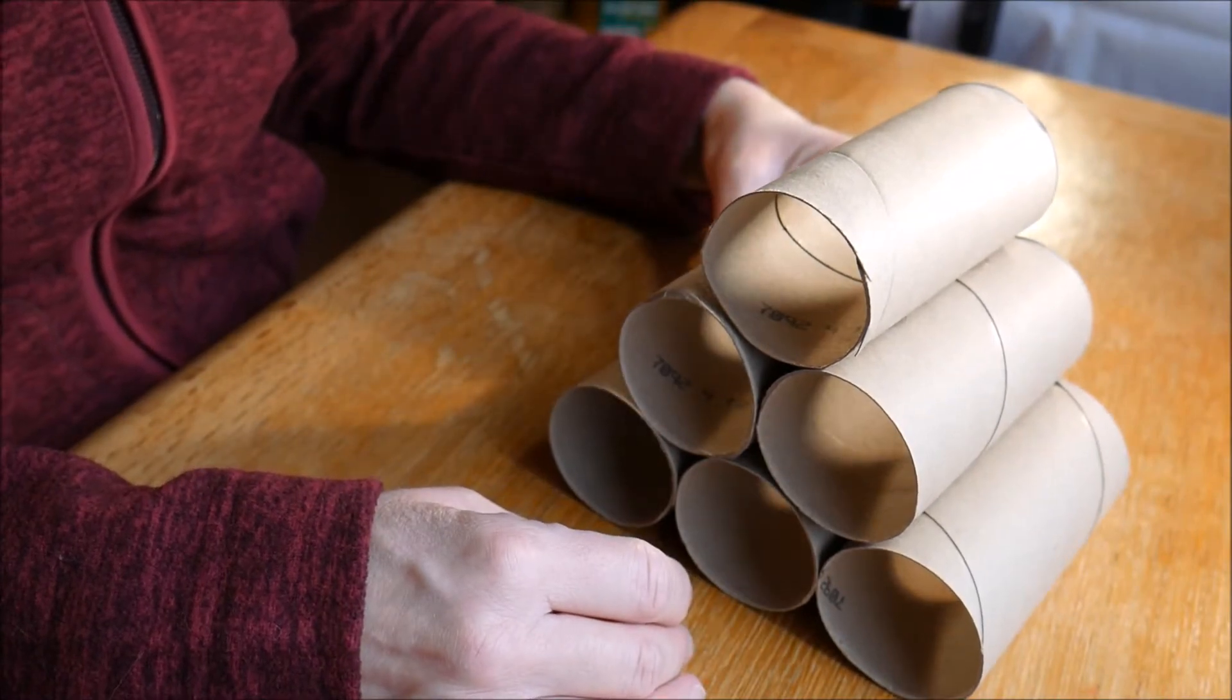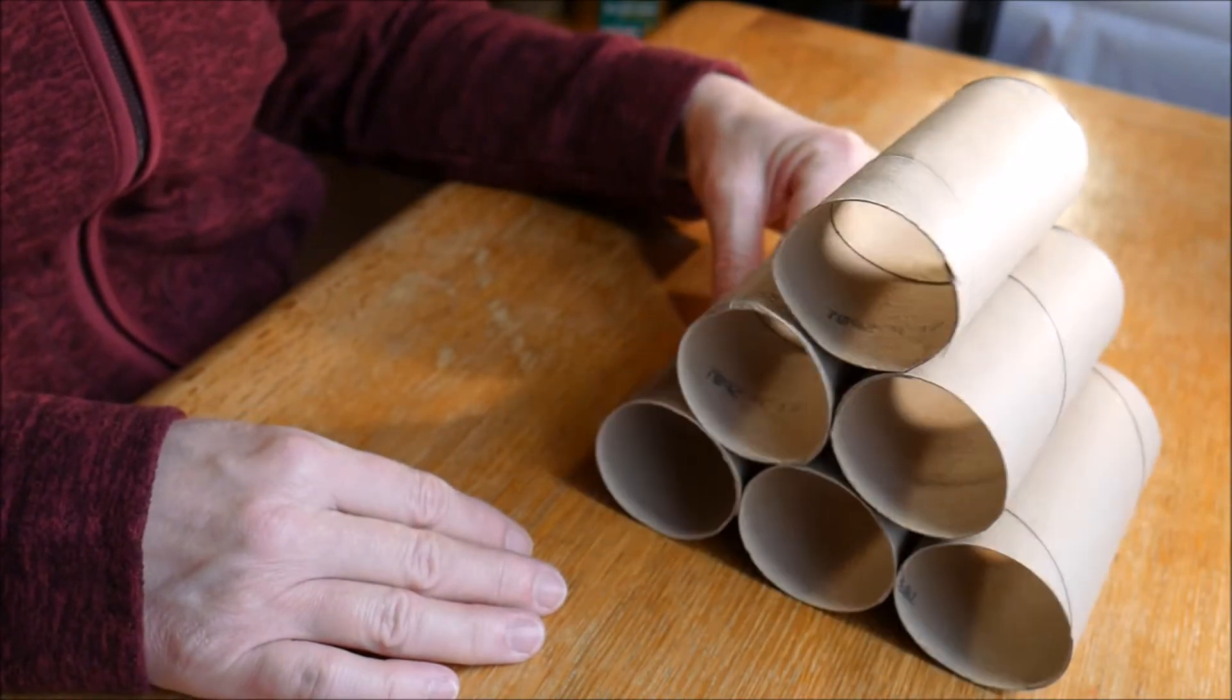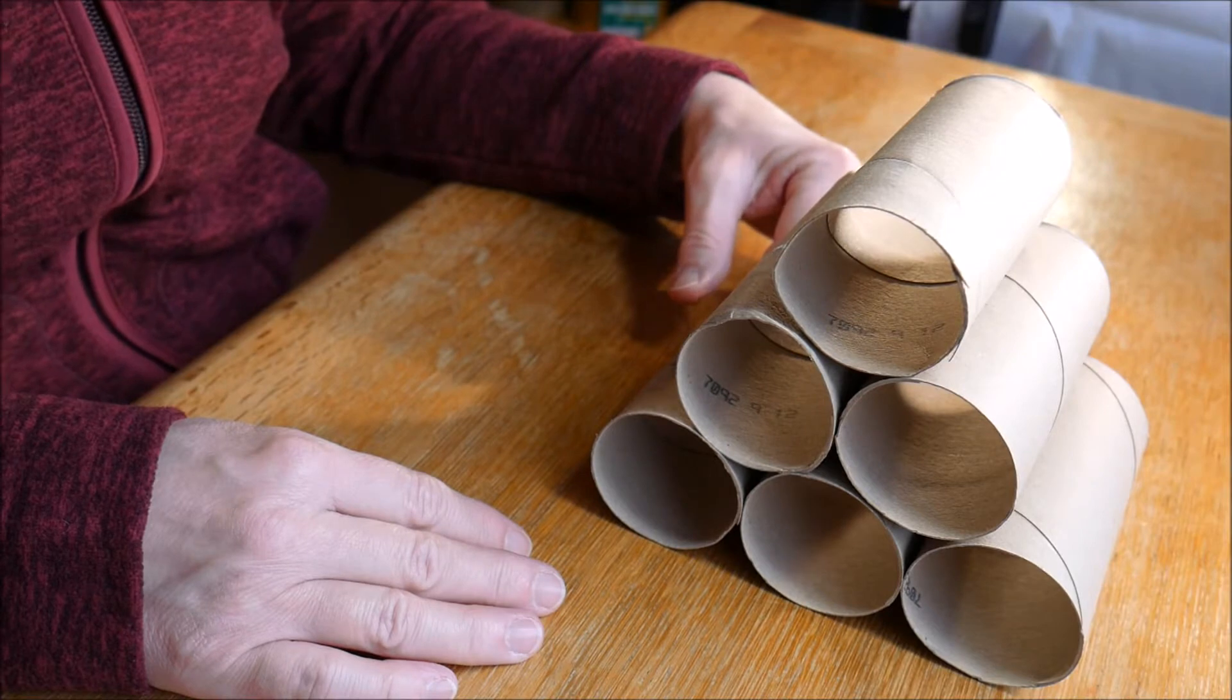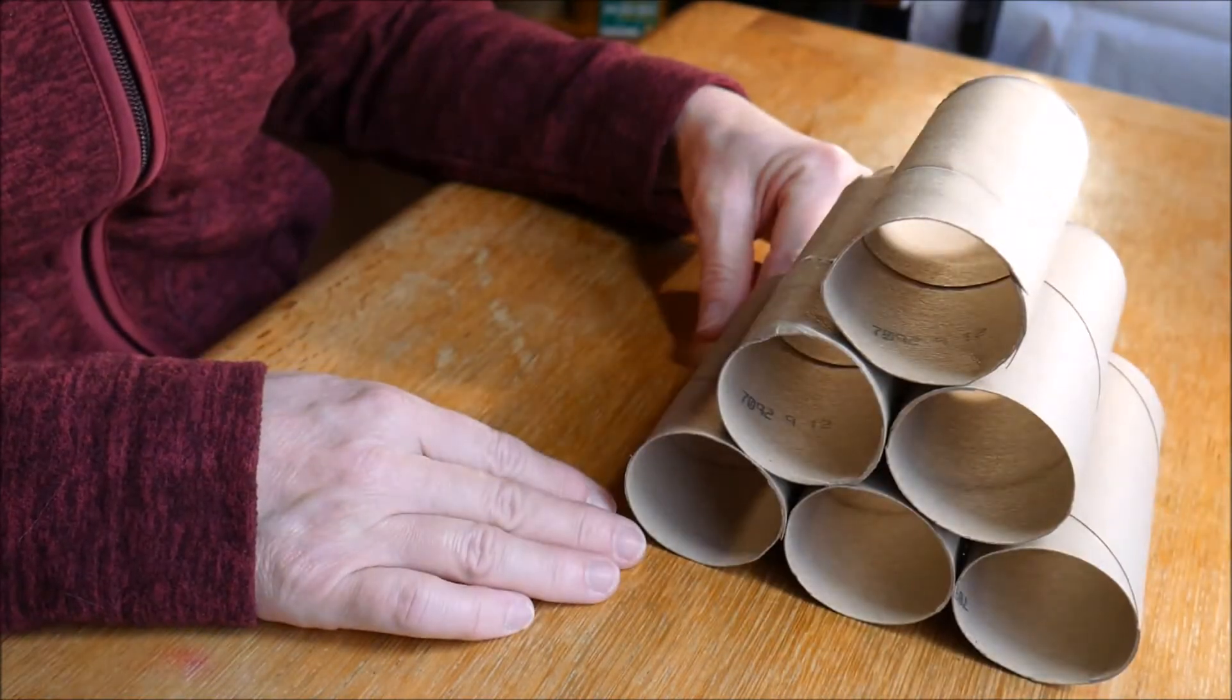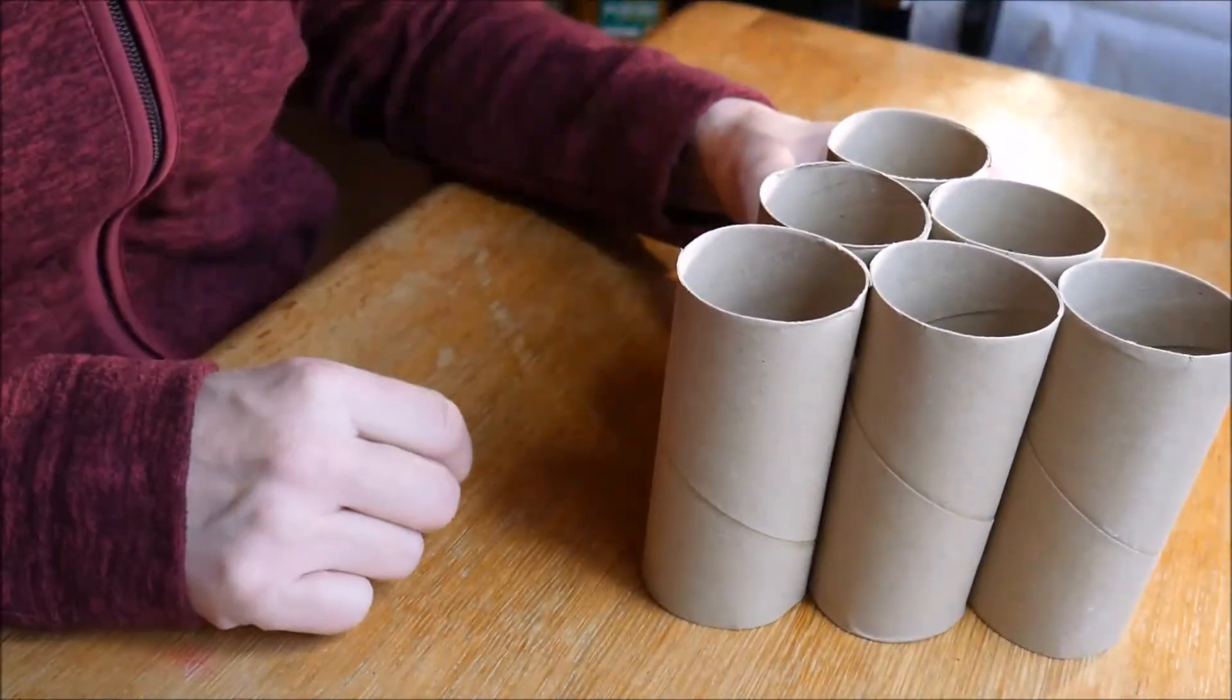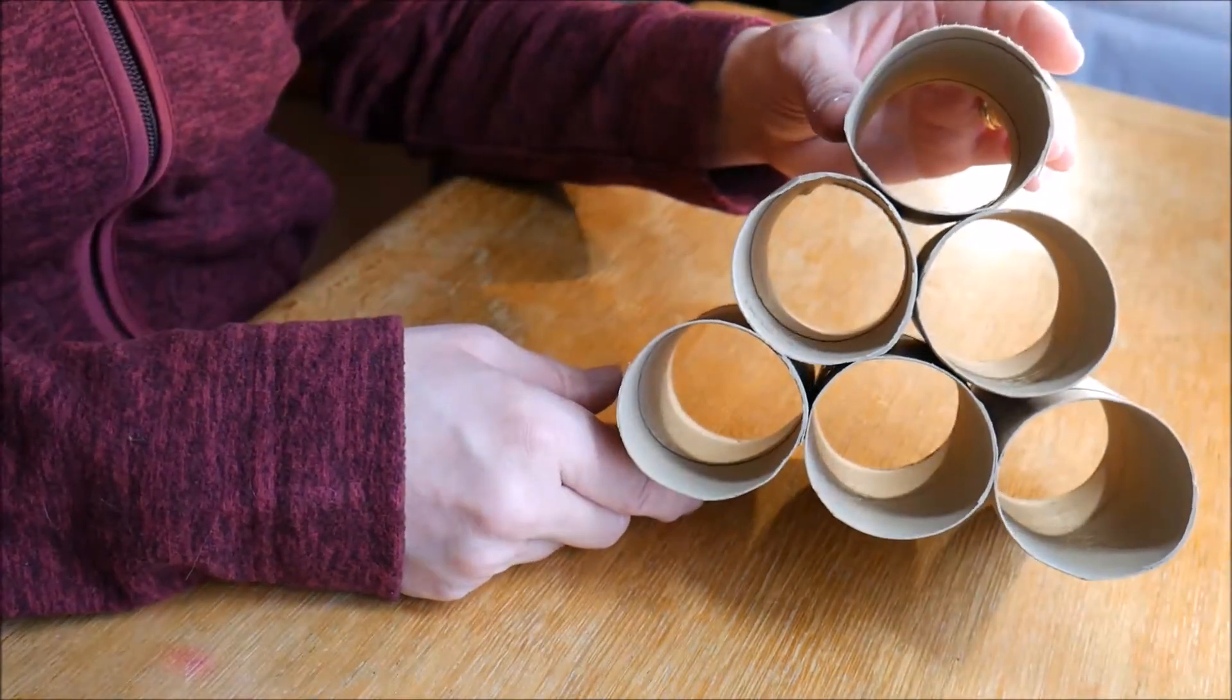Hello everybody! Today we're going to make something really simple which is great for children, adults, anybody who doesn't want anything too complex to make. Now this is going to be a puzzle feeder using things that everybody will have in the home. As you can see it's just six toilet rolls.